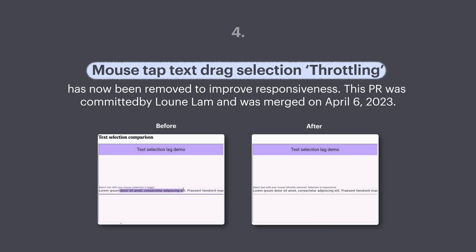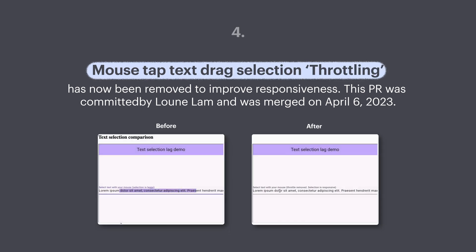Number four: mouse tab text drag selection throttling has now been removed to improve responsiveness. This PR was committed by Loon Lam and was merged on 6th April.